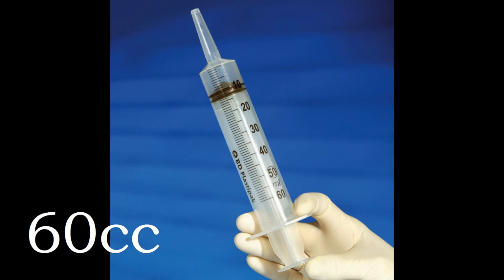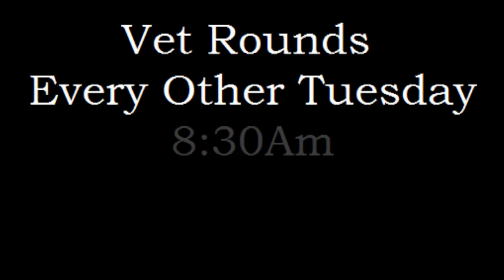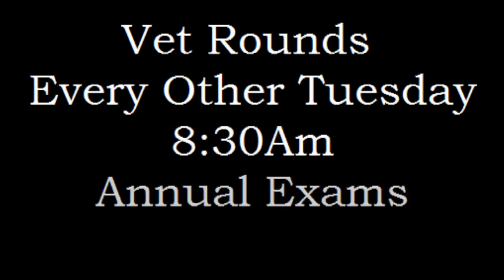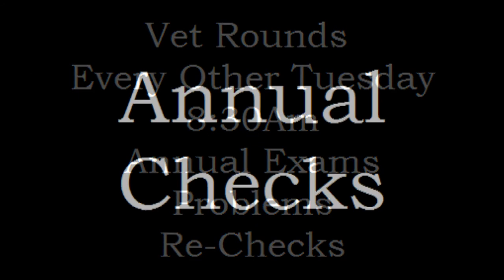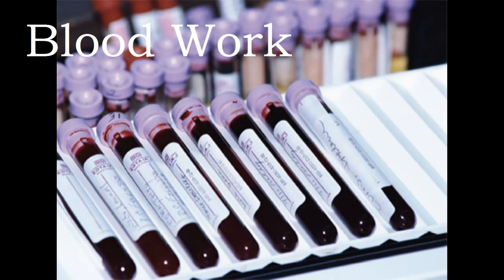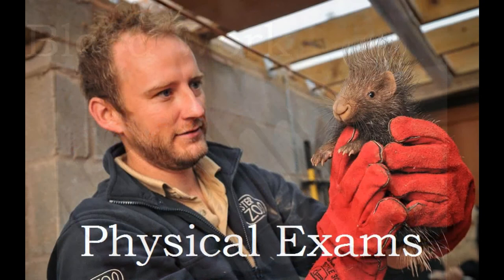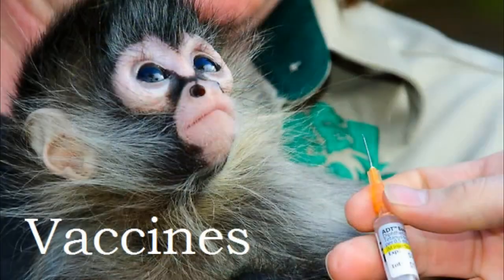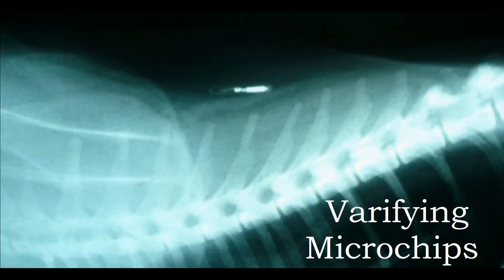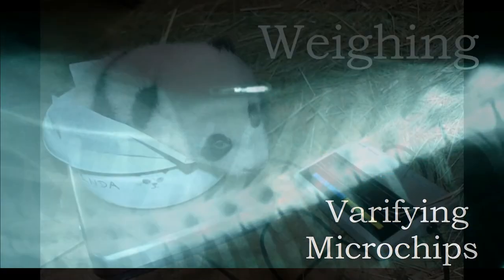Vet rounds occur every other Tuesday at 8:30 a.m. for annual exams, problems, and rechecks. Annual checks include blood work, physical exams, urinalysis, dental exams, vaccines, verifying microchips, and weighing.